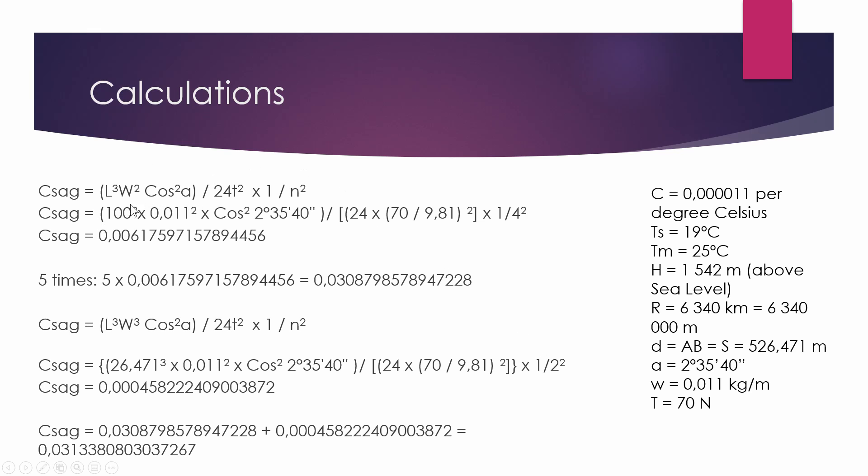So for the first calculation, we'll have the 100 meters, the w, which was given to us, the angle, which was given to us, or that we calculated of the slope on the site. And then we'll have our tension, which is 70 newtons divided by 9.81, to convert it to kilograms. The reason we do that is because our w is in kilograms, so the t and the w have to be in the same units. And then the n, as I explained, and we'll get the sag for one 100 meter section. We can times that by 5, because we'll have the same sag for each section. So that means we can take the total amount of error and add them together.